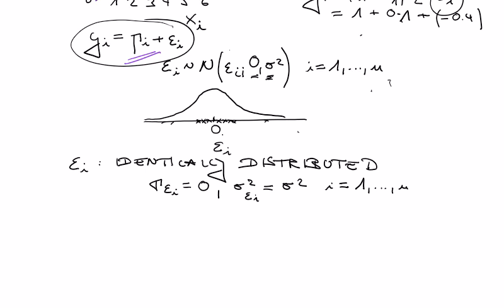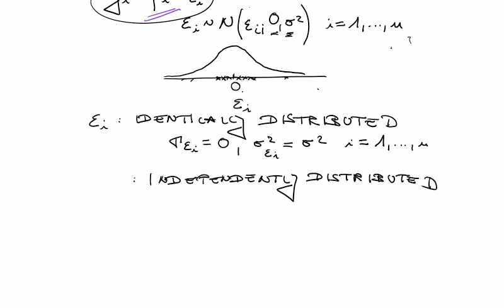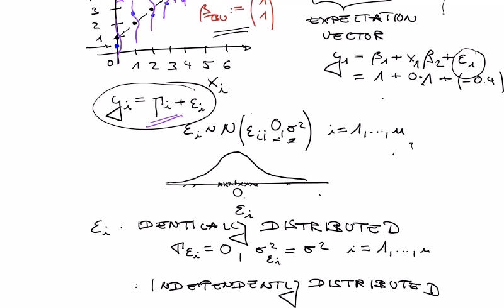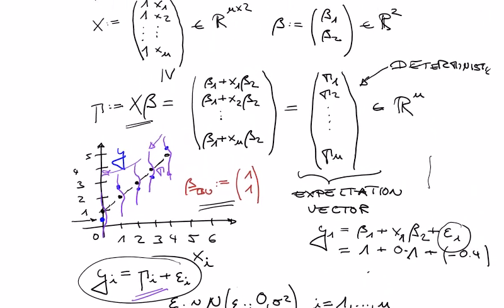Equally important is the idea that they are independently distributed. We have to talk more about this from the multivariate Gaussian perspective. The fundamental idea why this modeling assumption is made is that with the GLM you want to describe patterns in the data — for example, that if you increase x, the value of the data also increases — and this pattern is deterministic.